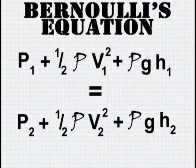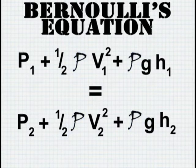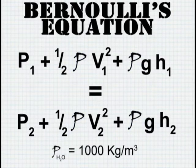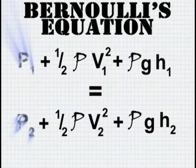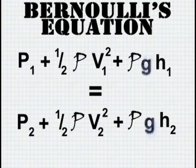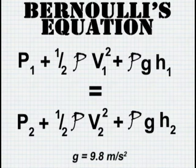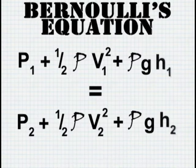The symbols in Bernoulli's equation represent different constants and variables. Here is Bernoulli's equation. The character rho, which looks like a cursive P, represents the density of the fluid. The density of water is always 1,000 kilograms per meters cubed. V represents the velocity of the fluid. Capital P represents static pressure. G represents acceleration due to gravity, which on Earth's surface is 9.8 meters per second squared. And H is the vertical distance from your reference line.